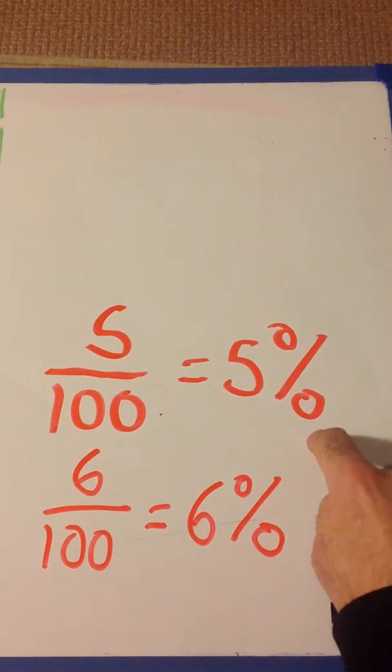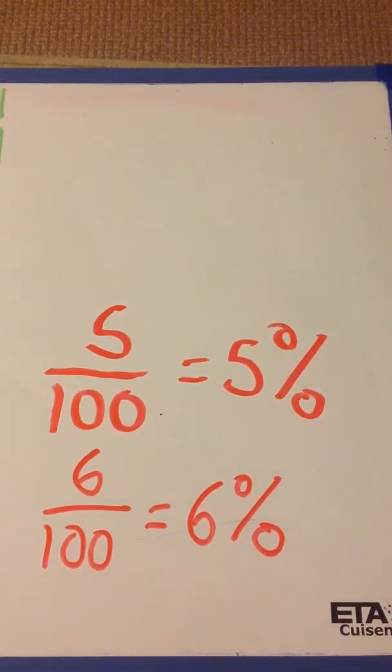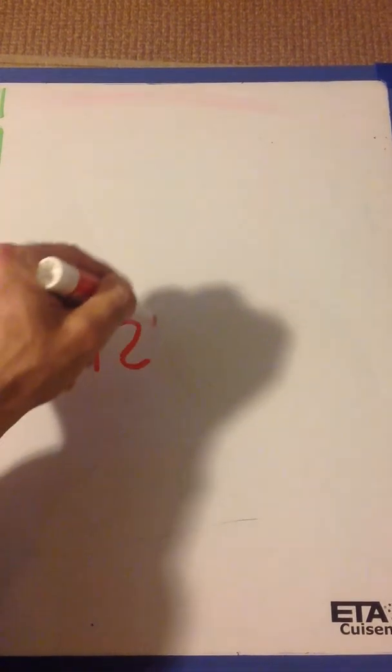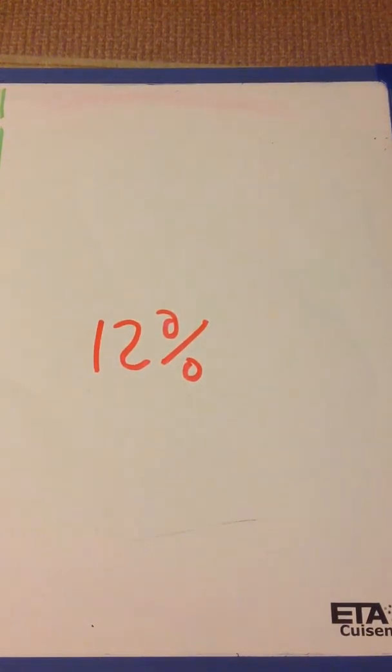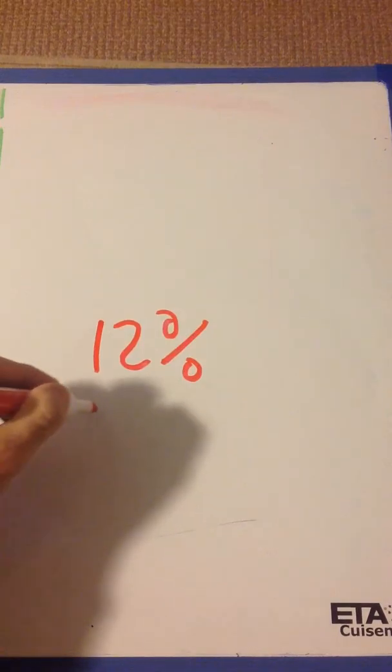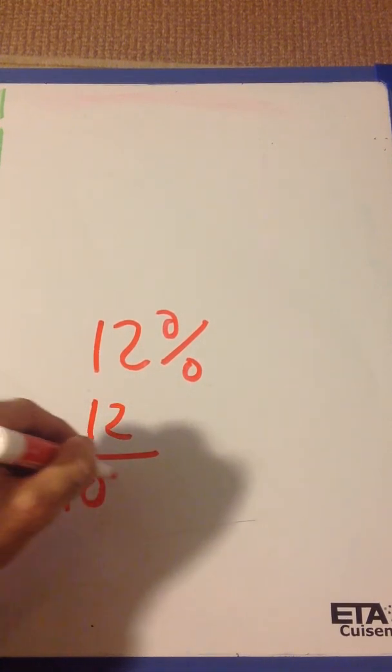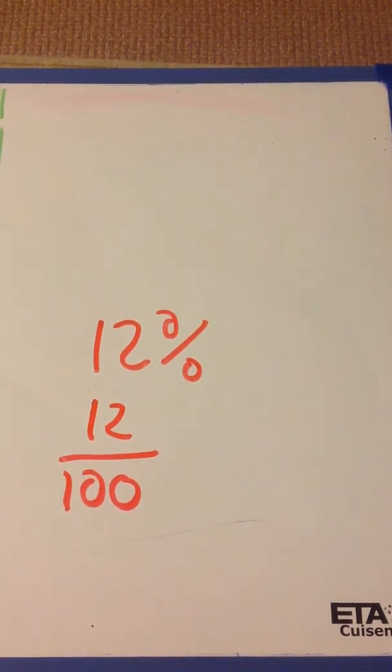The percent sign will tell us that it's over 100. So let's say I had 12%. Well, 12%, the percent sign is telling me that it's 12 over 100. So again, percents are fractions.